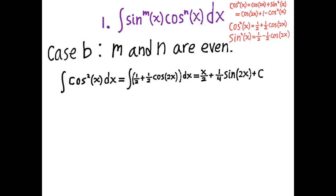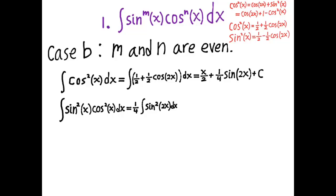Another example with m and n both even: what if m and n are both 2, giving the integral of sine squared x times cosine squared x dx? Here we can use the fact that sine of 2x equals 2 sine x cosine x, and immediately turn it into an integral of sine squared of x dx, which is done the same way as the integral of cosine squared of x, except now the argument is 2x instead of x, giving different coefficients.